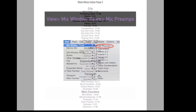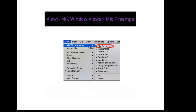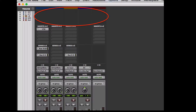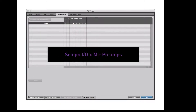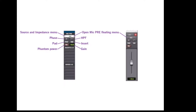To display your mic preamp controls in the mix window, go to View, Mix Window Views, Mic Preamps. This row will show up in your mix window. There are currently no preamps set up. To set up a hardware preamp in Pro Tools, you need to find two different menus. First, go to Setup, Peripherals, Mic Preamps, and fill in the corresponding info for your hardware preamp. Next, go to Setup, I/O, Mic Preamps to fill in the I/O path of the hardware unit.